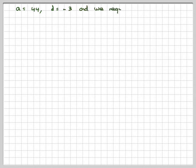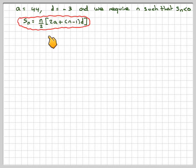So we want A is 44, D is minus 3, and we require the least value of N such that SN is less than 0. So using the sum formula, SN equals N over 2, brackets 2A plus N minus 1 times D.